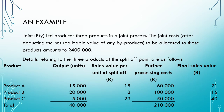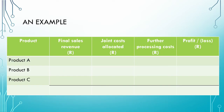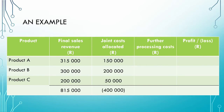There is one more thing we need to look at regarding the physical measures method — what does our final profit per product look like? Our profit per product will be the final sales value less the further processing costs and less the joint costs allocated. To get total sales revenue, we take the final selling price and multiply it by the units produced. We then deduct the joint costs allocated and the further processing costs to arrive at the profit or loss for each product.